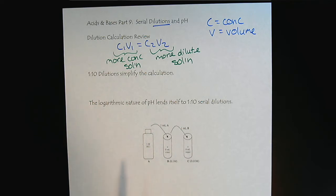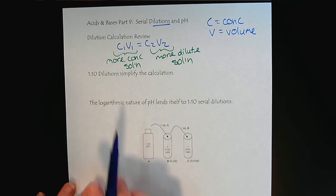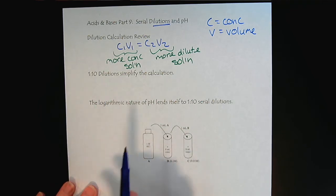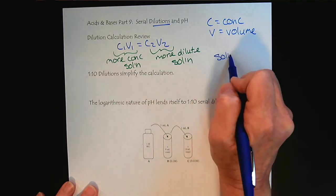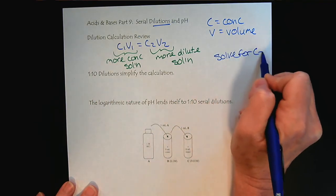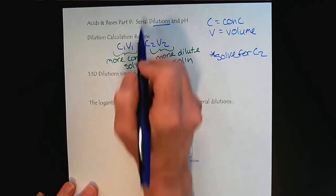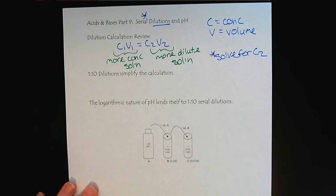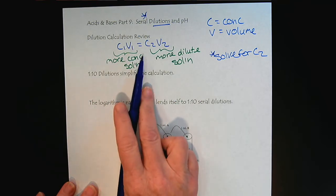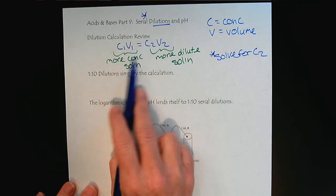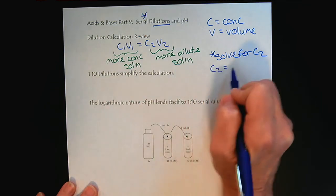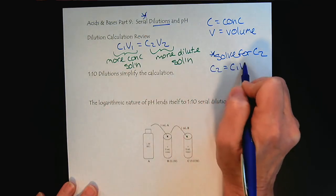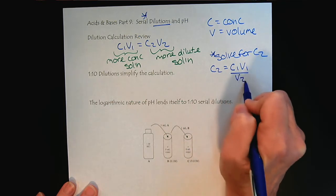The beauty here is that for serial dilutions, we are going to want to solve for C2. This is unique to the serial dilution situation. So if we rearrange our dilution calculation for C2, we would see that C2 equals C1 V1 over V2.